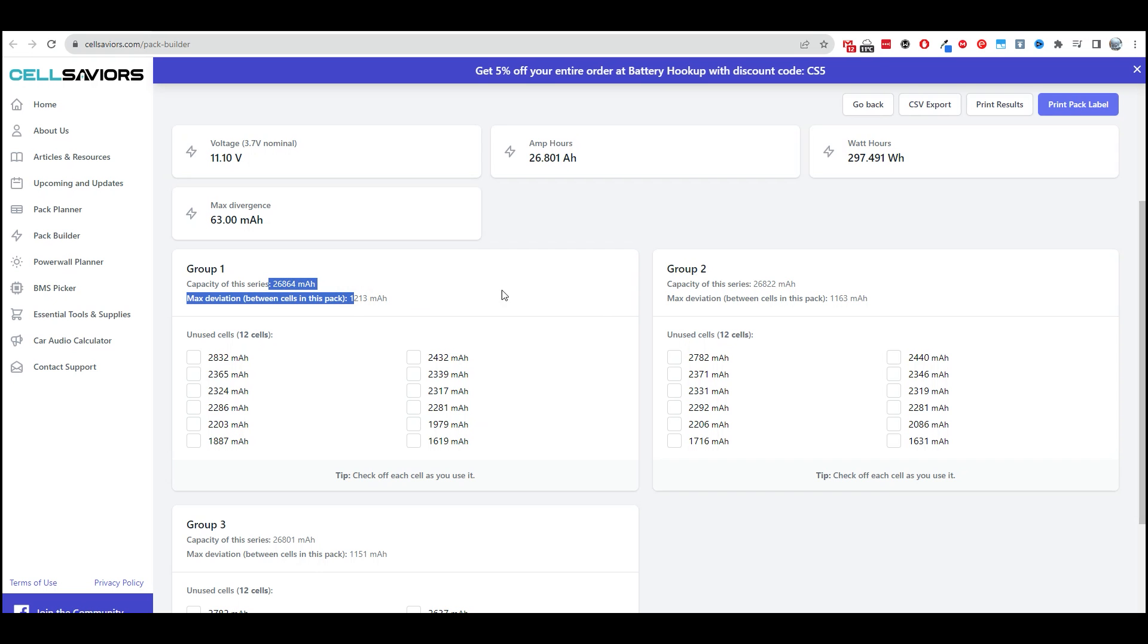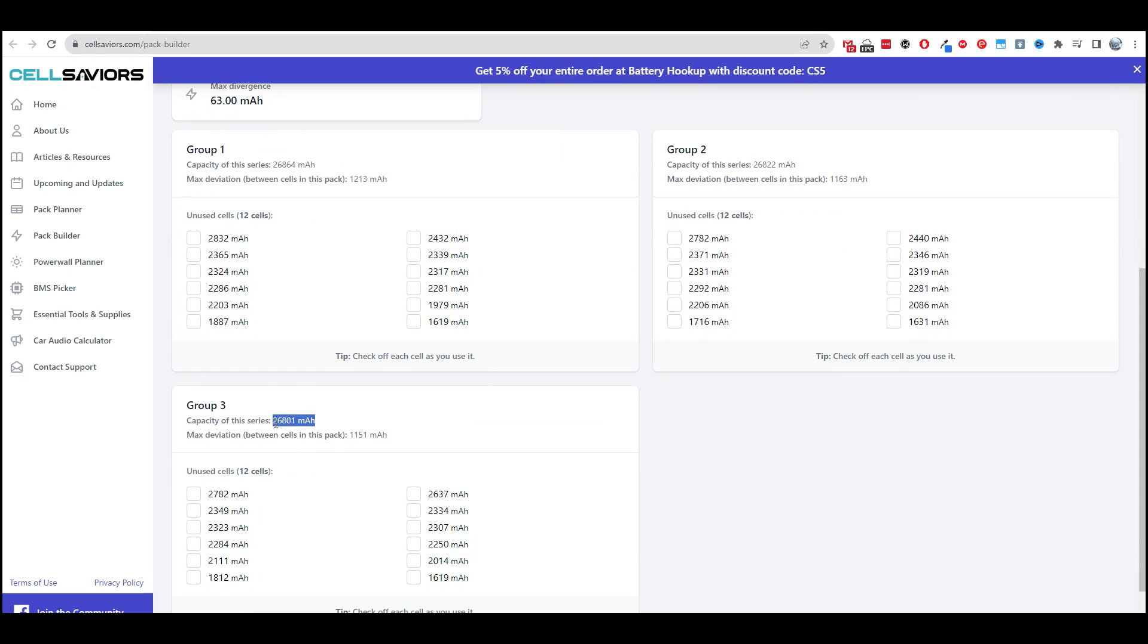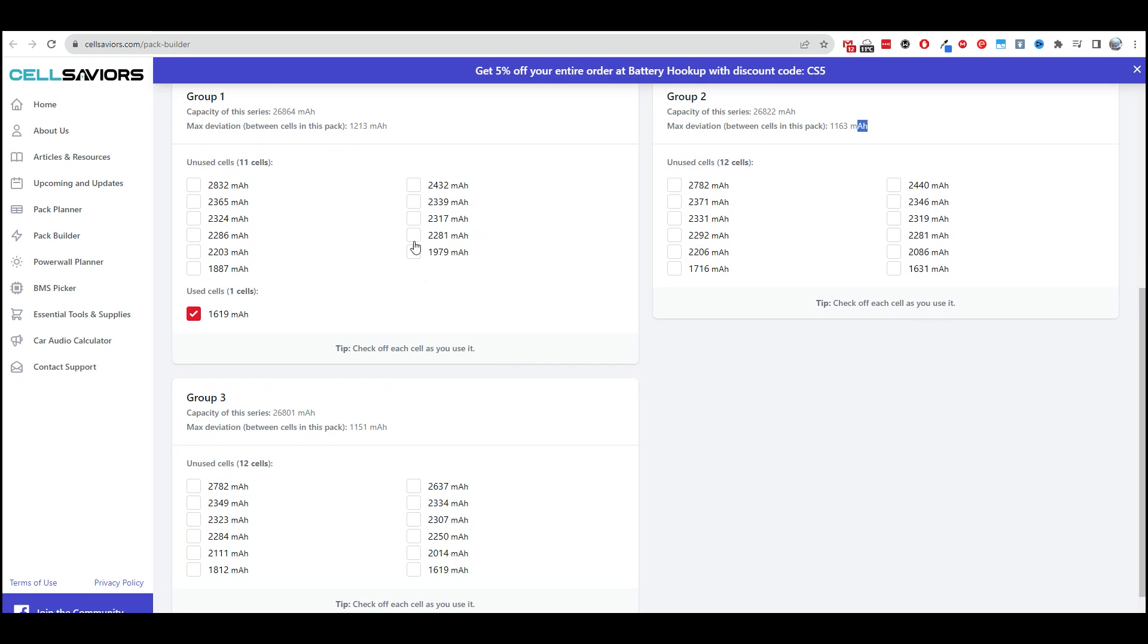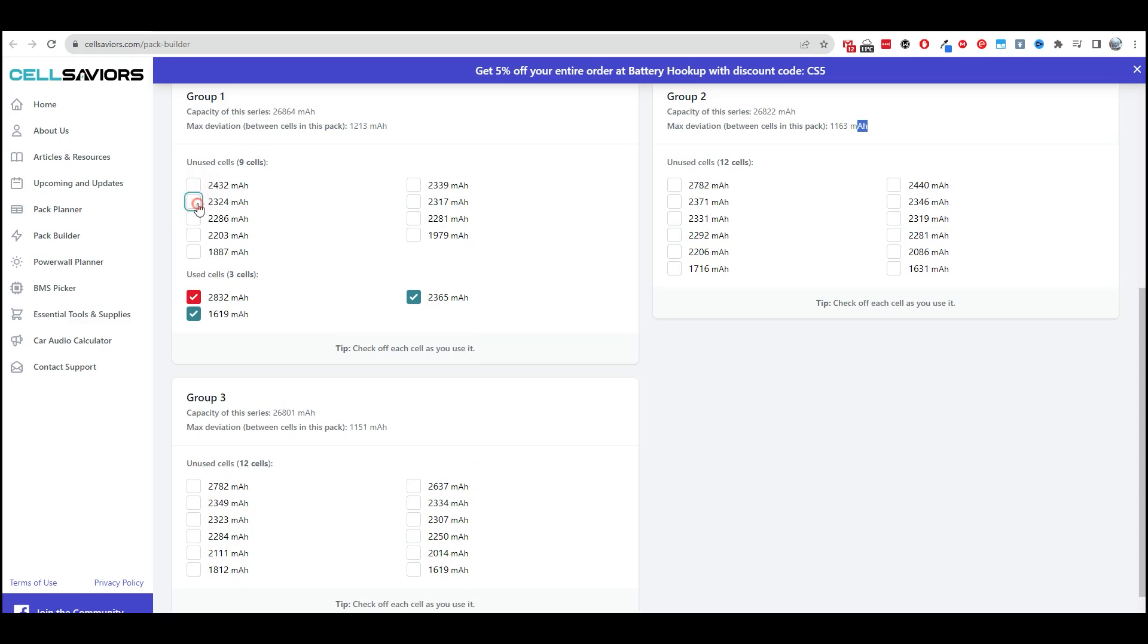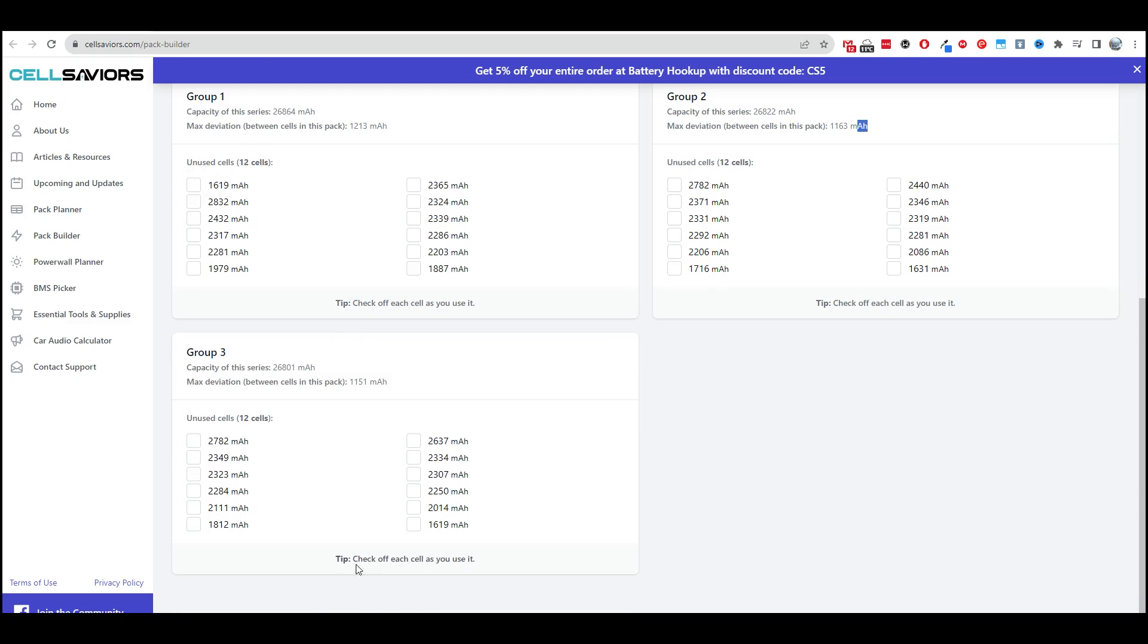And this is how we arrange the power elements. Here group 1 will have a capacity of 26,864, the next 26,822, 26,801 milliampere hours. The difference will be a maximum of 1151 milliampere hours. We can mark the batteries that we have already installed and fill our assembly.